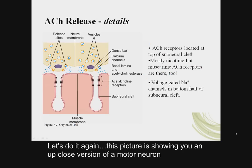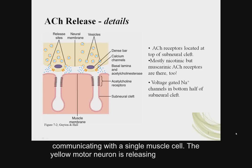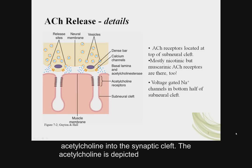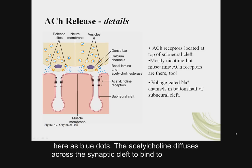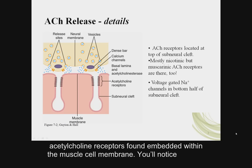This picture shows an up-close version of a motor neuron communicating with a single muscle cell. The yellow motor neuron is releasing acetylcholine into the synaptic cleft. The acetylcholine, depicted here as blue dots, diffuses across the synaptic cleft to bind to acetylcholine receptors found embedded within the muscle cell membrane.